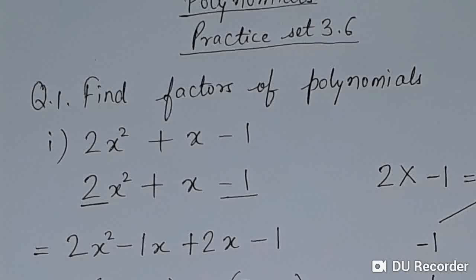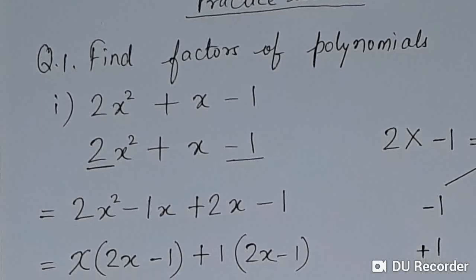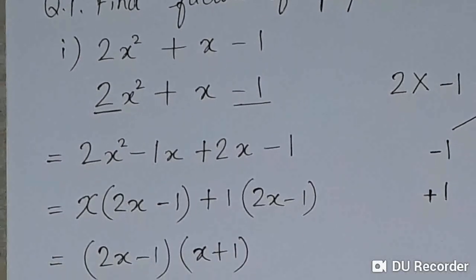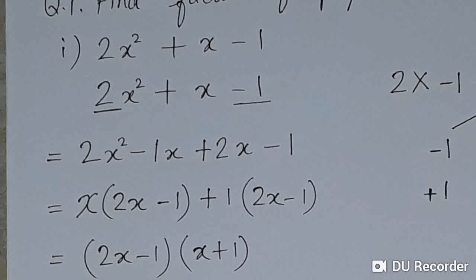Now we have four terms: 2x² - 1x + 2x - 1. From the first two terms, x is common, so we take x out: x(2x - 1). From the last two terms, 2x and -1, we take +1 as common, giving +1(2x - 1). Now (2x - 1) is common throughout, so we take it out: (2x - 1)(x + 1).